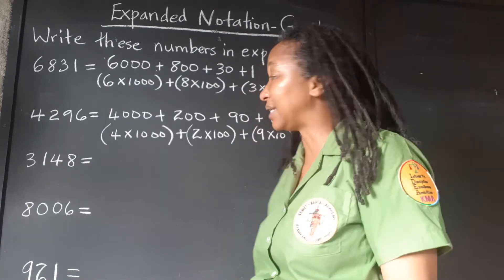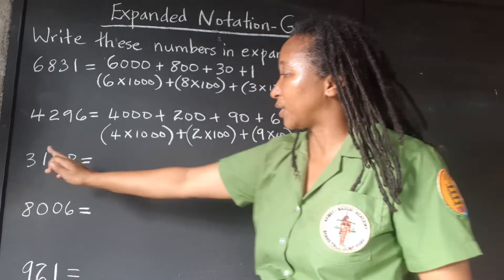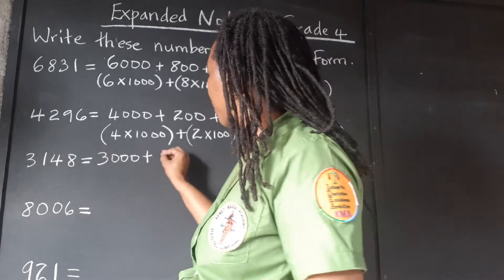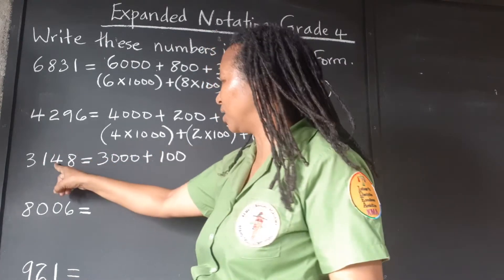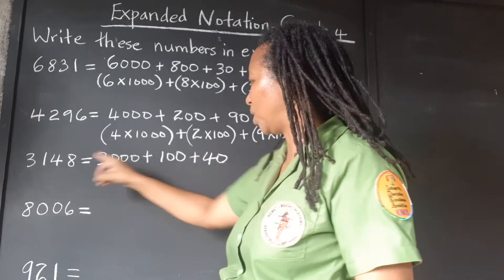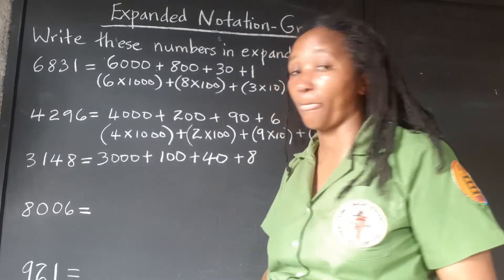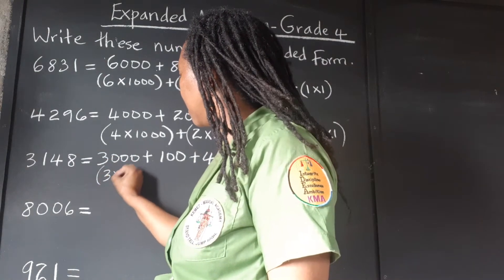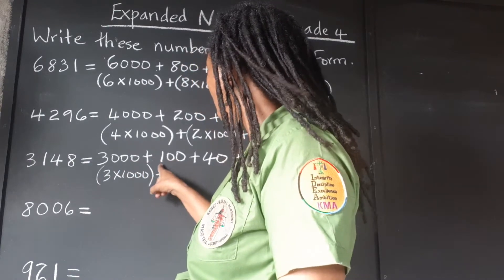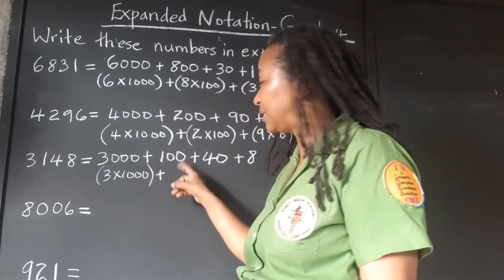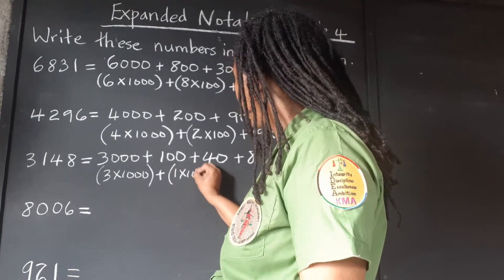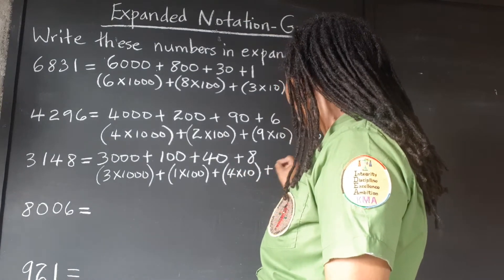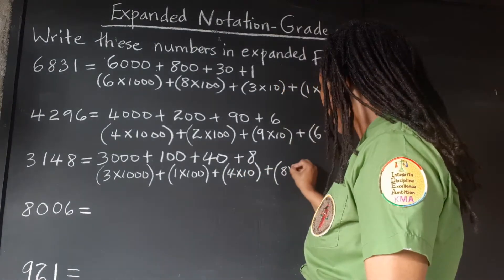That's all there is to expanded notation. So that's 3,000 plus 100 plus 40 plus 8. That's 3 times 1,000, plus 1 times 100, plus 4 times 10, and of course 8 is 8 times 1.